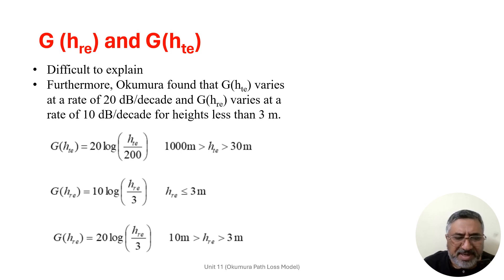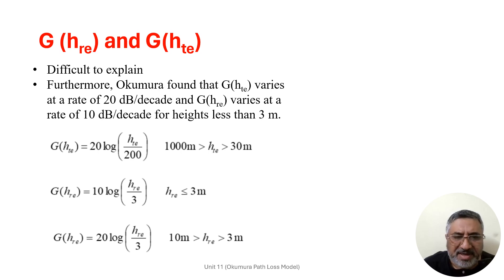The transmitter antenna gain is defined as 20 log(HDE / 200), where the transmitter antenna height is between 30 m and 1000 m. Similarly, the receiver antenna gain is defined as 10 log(HRE / 3) where HRE is less than 3 m. When the receiver antenna height is greater than 3 m and less than 10 m, the gain is defined as 20 log(HRE / 3). These variables are first determined individually and then incorporated into the Okumura equation to give the empirical relation for path loss.